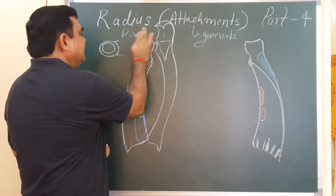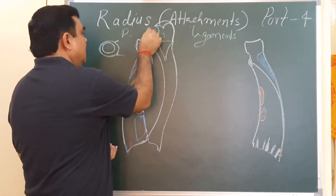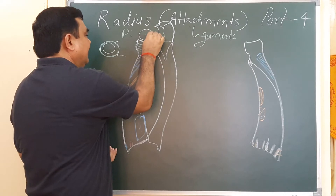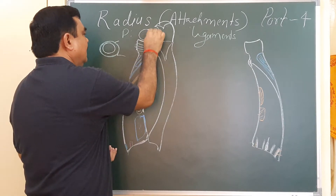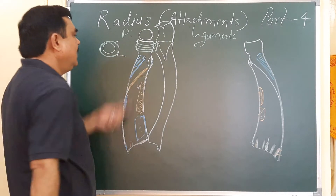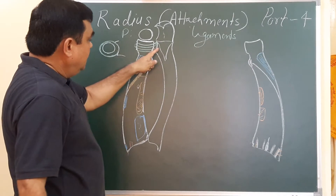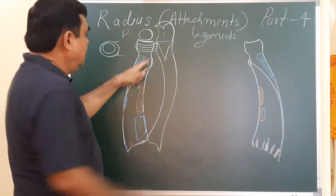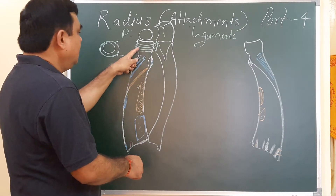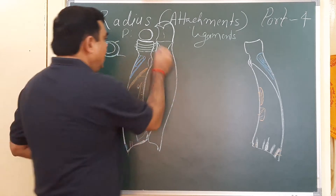One articular surface is here, where the capitulum of the humerus articulates. Here, this is the annular ligament. This ligament is the annular ligament.